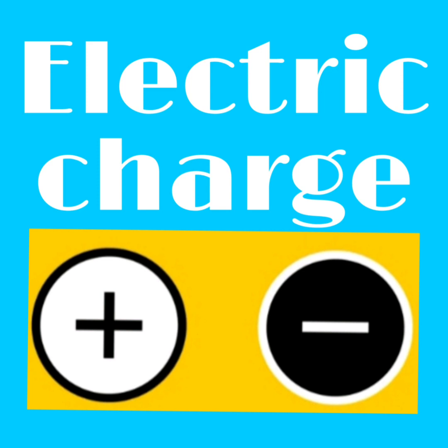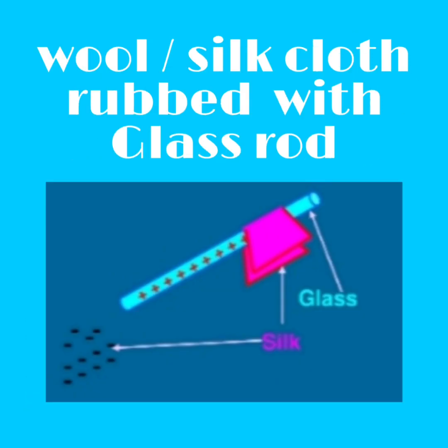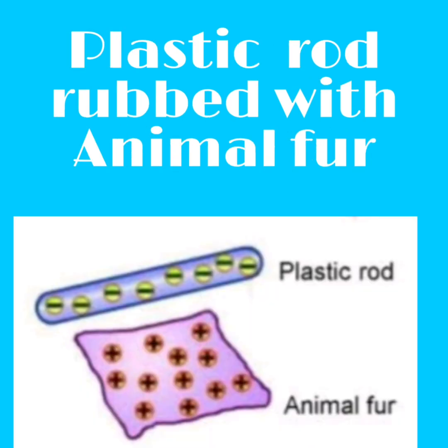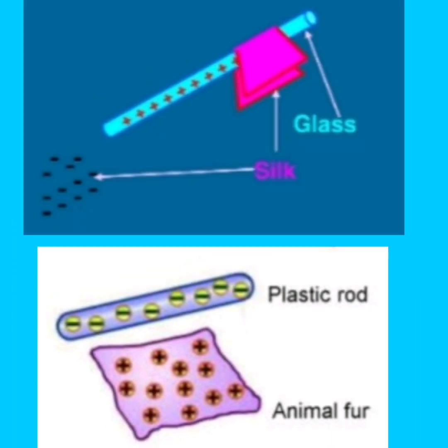Wool cloths and similar materials can repel. Glass rod and silk or wool cloths attract each other. Similar to animal fur, two plastic rods repel each other. Plastic rods and glass rods attract each other, while two plastic rods repel each other.